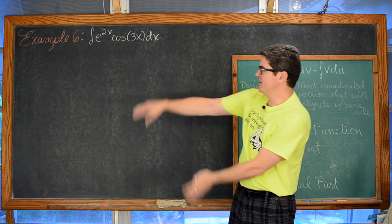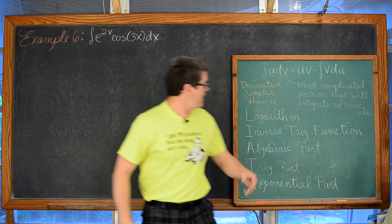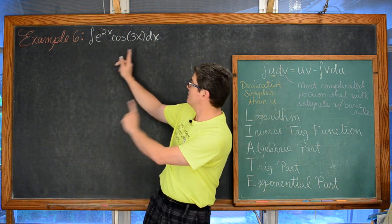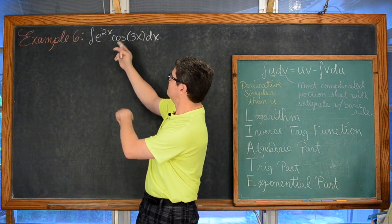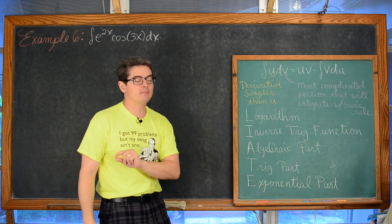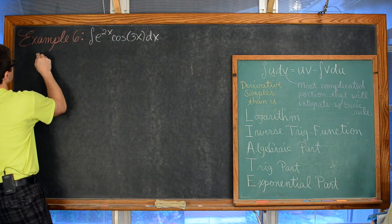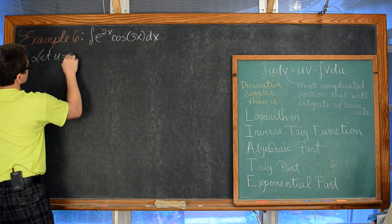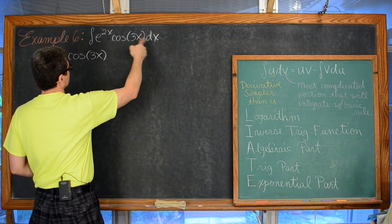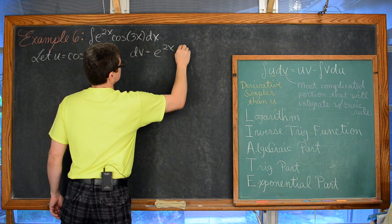Last example, number six: find the indefinite integral of e^(2x) cosine(3x) dx. Using LIATE: no logarithm, no inverse trig, no purely algebraic factor. We do have a trigonometric factor — cosine of 3x — so we let u equal cosine of 3x, and dv equals e^(2x) dx.